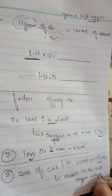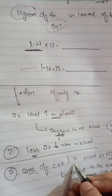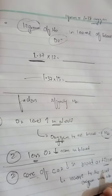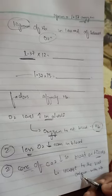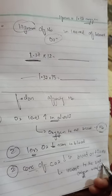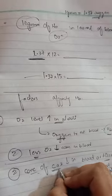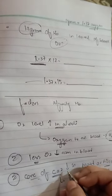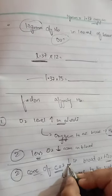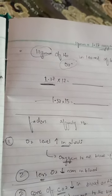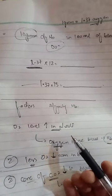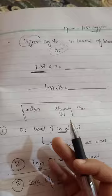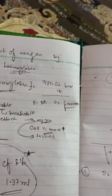When carbon dioxide concentration is less in blood or tissues, oxygen will bind with hemoglobin. Other factors that increase the affinity of hemoglobin to bind with oxygen include pH and temperature. This concludes the topic of transport of oxygen by hemoglobin.